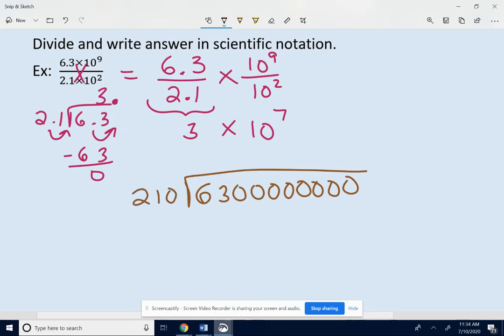Just divide these as normal. 210 goes into 630 three times, exactly three times. So we need to put zeros down. So there's our answer in standard form.